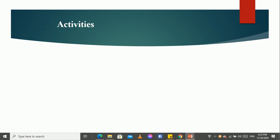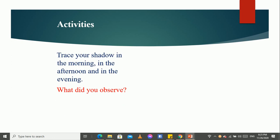So, children, I think you understood the poem very well. So, let us do some activities. So, the first activity for you, trace your shadow in the morning, in the afternoon, and in the evening. What did you observe? If you see the shadow from the morning to the afternoon and to the evening, there are differences in the shadow. So, you find out those differences.